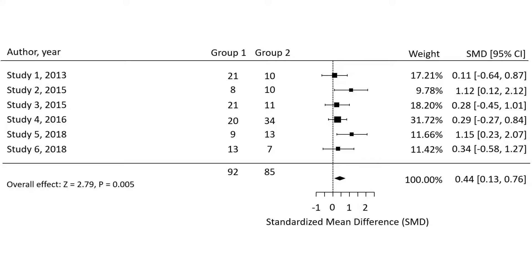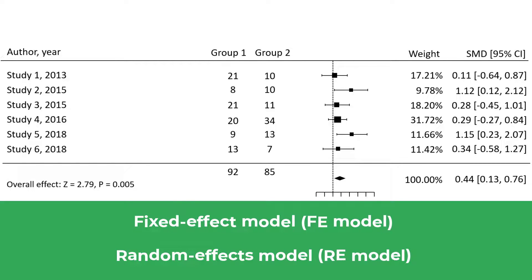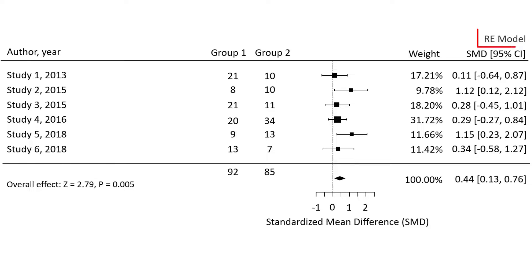Another aspect you should be aware of when interpreting forest plots is the model used to determine the summary effect. There are two types of models: a fixed effect model and a random effects model. They differ in the way they assign weights to the individual studies and ultimately change how the summary effect is calculated. In this example a random effects model was used, as noted in the corner of the plot. If a fixed effects model was used, you would commonly see the abbreviation FE here instead.